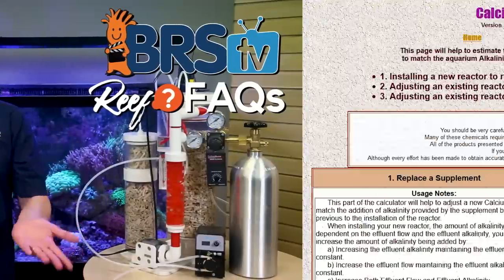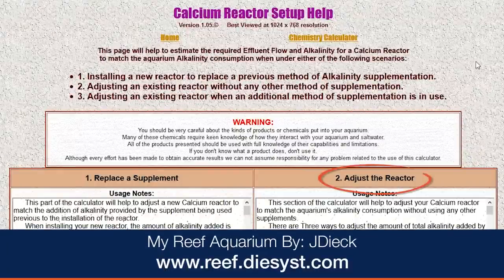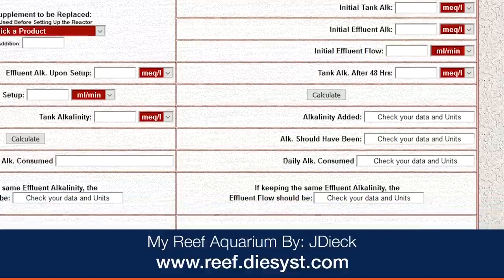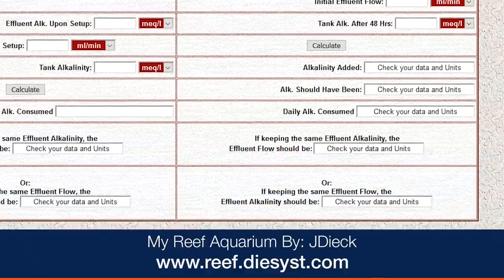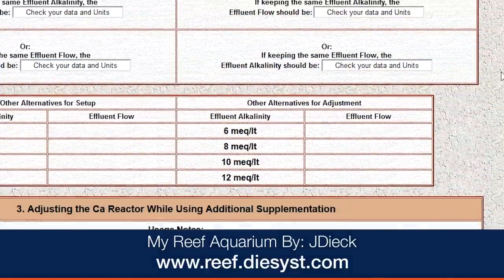The answer is easy — it's just JD's calcium reactor setup calculator with a specific focus on step two: adjust the reactor. Enter a handful of fields and it'll spit out your settings or adjustments to quickly tune the reactor to your needs.